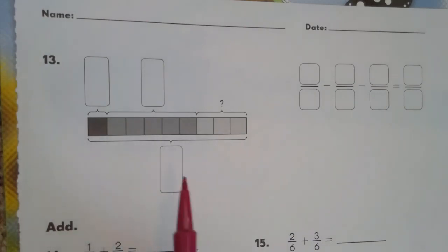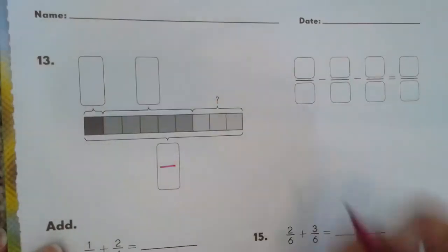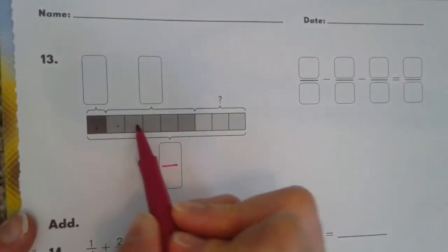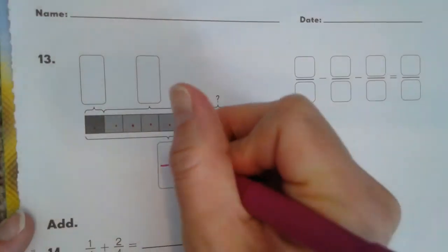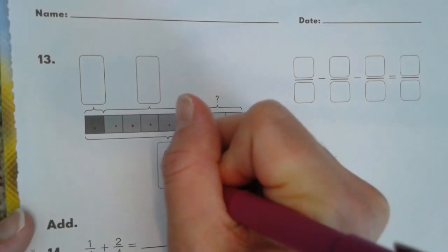So, we have our whole. We have to figure out how many parts are in our whole. 1, 2, 3, 4, 5, 6, 7, 8, 9. So, there are 9 ninths in my whole.